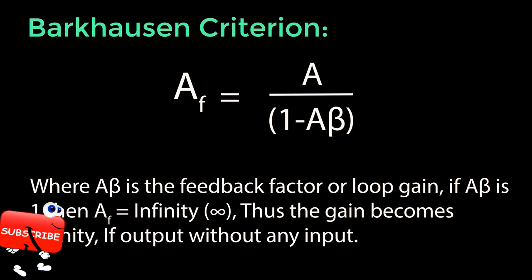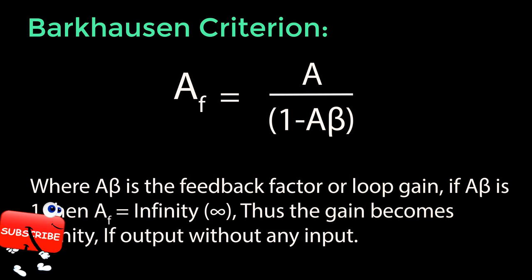Thus, the gain becomes infinity if output without any input. Therefore, the amplifier in this condition works as an oscillator. This condition A beta equals 1 is called Barkhausen Criterion.